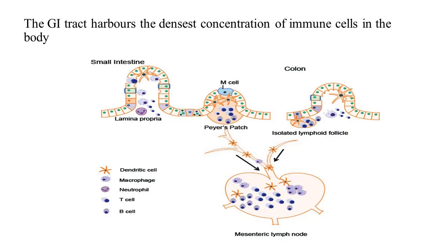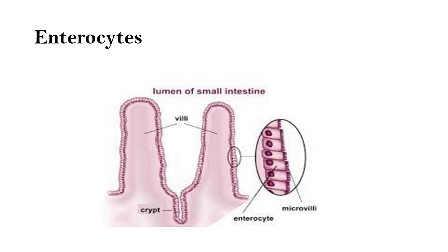Our gut is constantly exposed to trillions of microbes either through direct physical contact or through the chemicals that are secreted. The stomach and intestines are lined by a single layer of columnar epithelial cells. There are different types of epithelial cells: enterocytes, goblet cells, enteroendocrine cells, Paneth cells, microfold cells, cup cells and tuft cells. Let us see the functions of each of these cells in modulating the neuroimmune cell signaling pathway.